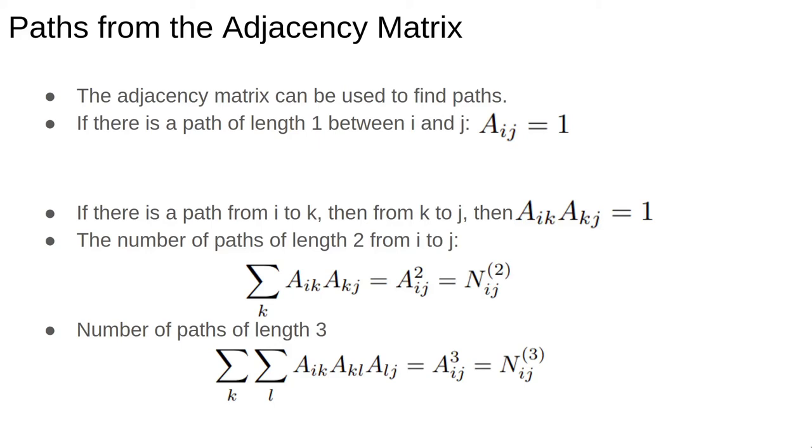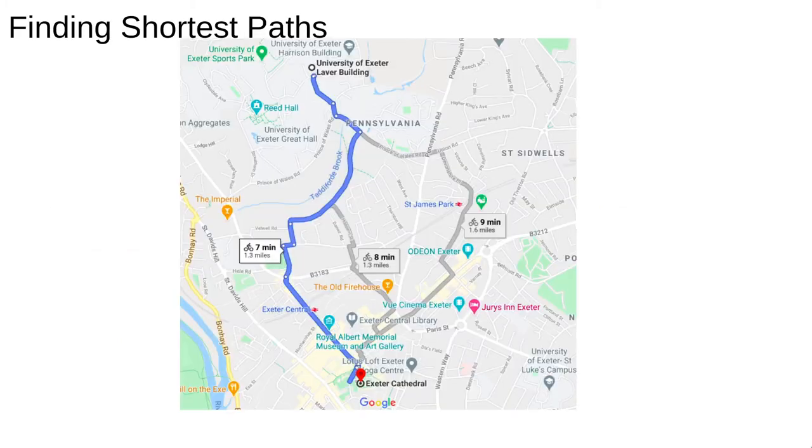Matrix multiplication is a numerically very expensive operation. Here is an example of a Google Maps route from the University of Exeter Labour Building to Exeter Cathedral. The roads in Exeter can be represented as a network, with the length or average driving times perhaps as weights. The network could be directed to deal with one-way systems, but those details needn't concern us for now.